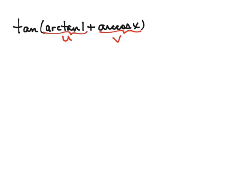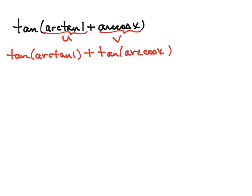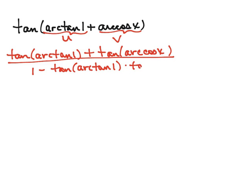So our tangent of u plus v would be the tangent of u — that's the tangent of the arctangent of 1 — plus the tangent of v, which is the tangent of the arccosine of x, divided by 1 minus the tangent of u, which is arctangent of 1, times the tangent of v, which is the tangent of the arccosine of x.